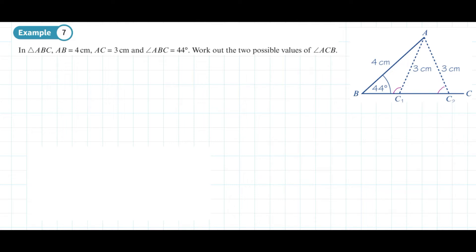With the sine rule, we need to be careful and think about whether we're trying to work out an obtuse angle or an acute angle. Let's work out the angle. We start with sine of c divided by the length that's opposite it, 4 centimeters.